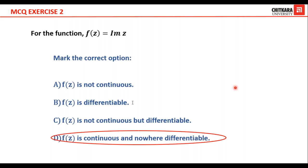A student asked: how is 1/i equal to −i? When i is in the denominator, multiply and divide by i. The numerator becomes i and the denominator becomes i squared = −1, giving −i. The conclusion for the second exercise: the function is continuous but nowhere differentiable, so the correct option is the last one — the function is continuous and it is nowhere differentiable.